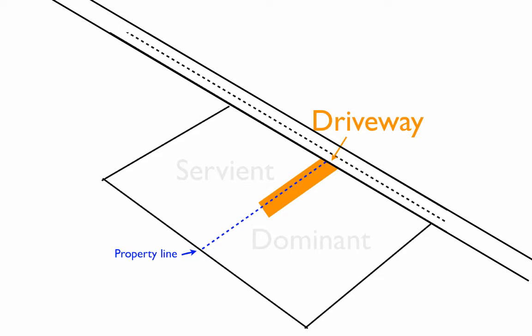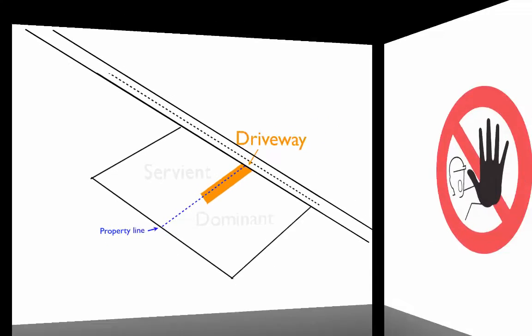This use must be open and notorious. What this means is that you cannot conceal your claimed easement from everyone, especially the property owner. So running across the back of your neighbor's yard at 2 a.m., only when you find out your neighbors are on vacation and could not possibly find you out, would probably not count as open and notorious use. The example of the driveway, however, is apparent to everyone.